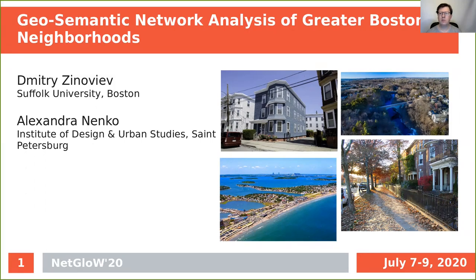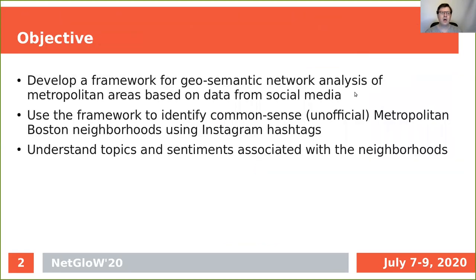A couple of pictures of these neighborhoods are shown on the right-hand side of the slide. The objective of this study is threefold. First, we are going to develop a framework for geosemantic network analysis of metropolitan areas based on data collected from major social media such as Twitter, Facebook, or Instagram. We use this framework to identify unofficial metropolitan Boston neighborhoods using Instagram hashtags. Finally, we are going to look into topics and sentiments associated with these neighborhoods.